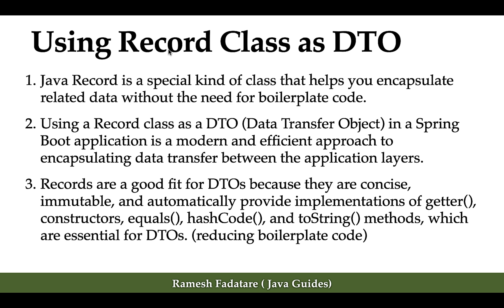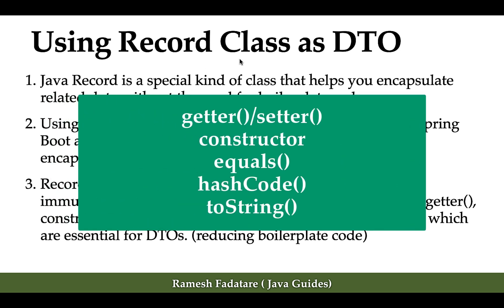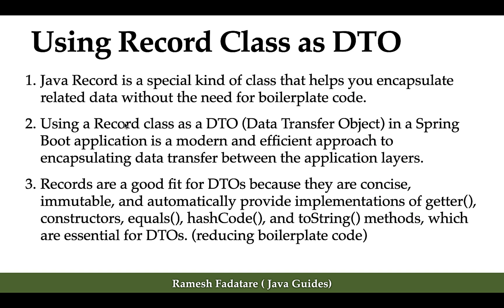Once we create a record class, the Java compiler automatically generates getter methods, constructors, equals, hashCode, and toString methods. In a normal Java class, we have to manually create all this boilerplate code. Using a record class as a DTO in a Spring Boot application is a modern and efficient approach. Records are immutable, concise, and a good fit for DTOs because they automatically provide all those essential implementations.